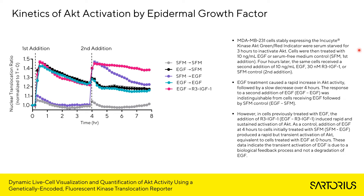MDA-MB231 cells stably expressing the Incusite Kinase AKT green-red indicator were serum-starved for three hours to inactivate AKT. Cells were then treated with EGF or serum-free media control for their first addition. The wells treated with EGF showed a rapid activation and increase of the nuclear translocation ratio. Control wells treated first with serum-free media showed no increase in NTR as AKT was not being activated. After four hours, each condition received a second addition; cells first treated with serum-free media were again treated with serum-free media, and no additional AKT activation was seen, as expected.